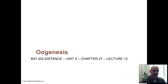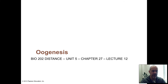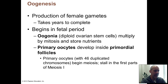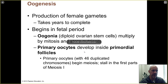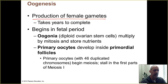We're going to start talking about the more complex processes of the ovarian and uterine cycles in a female. This first part will discuss what happens during oogenesis — the production of female gametes. It actually takes years to complete and has some key differences from sperm cell formation in a male.